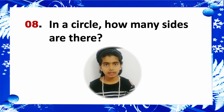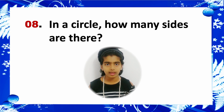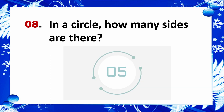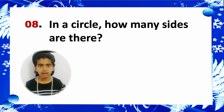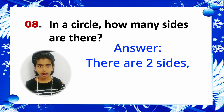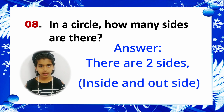Riddle 8: In a circle, how many sides are there? Answer: 2. There are two sides — inside and outside.